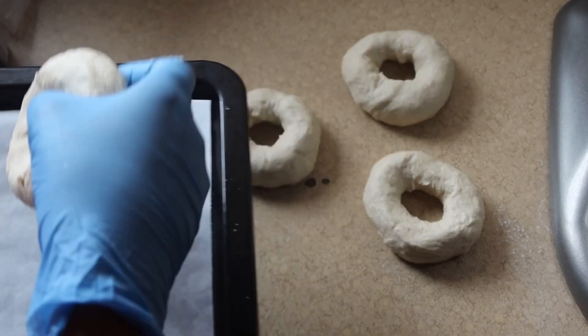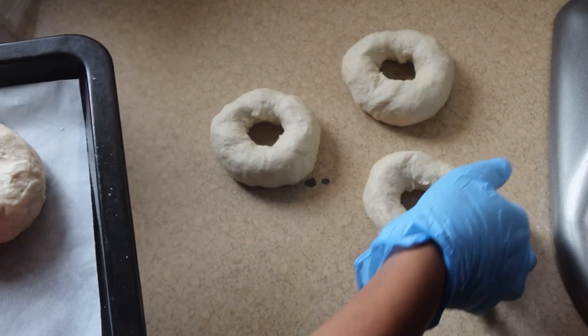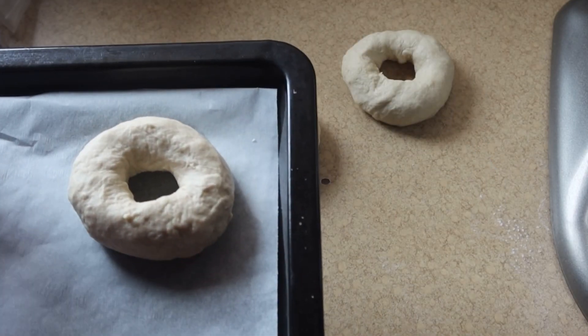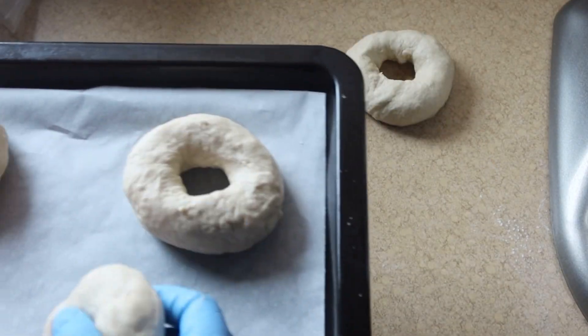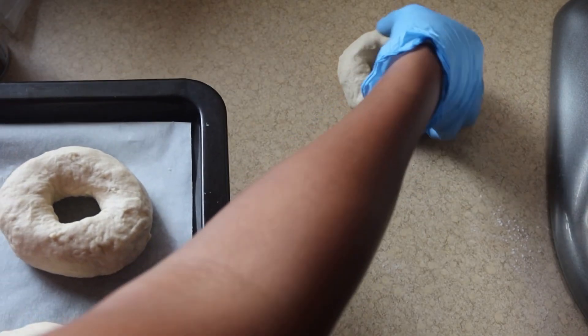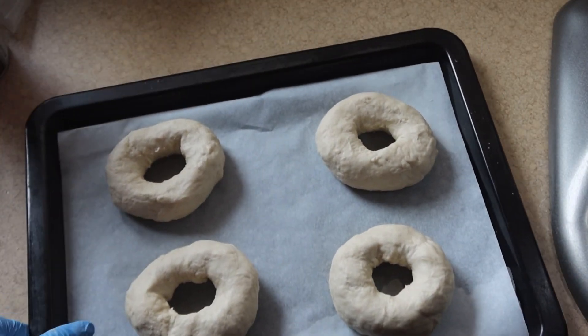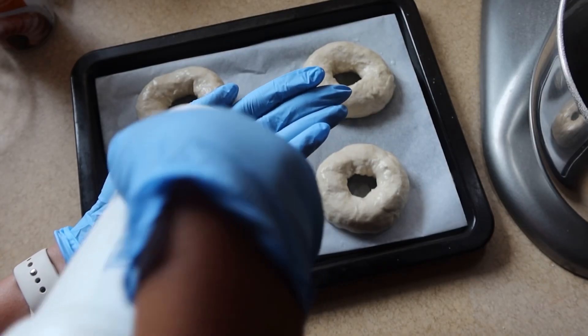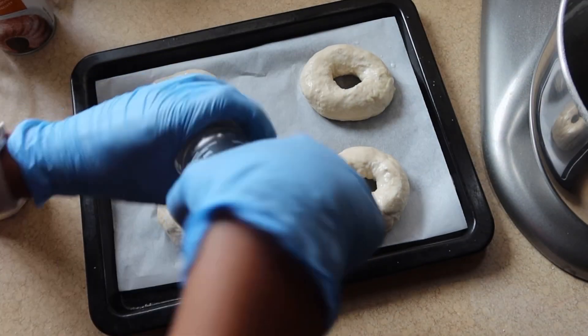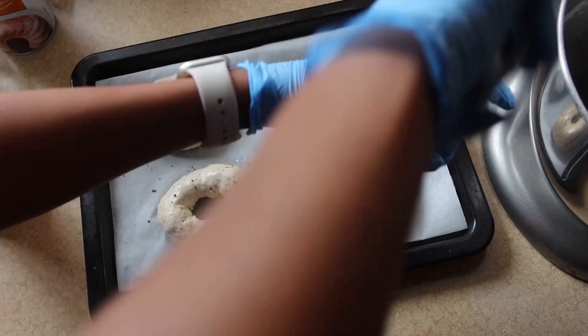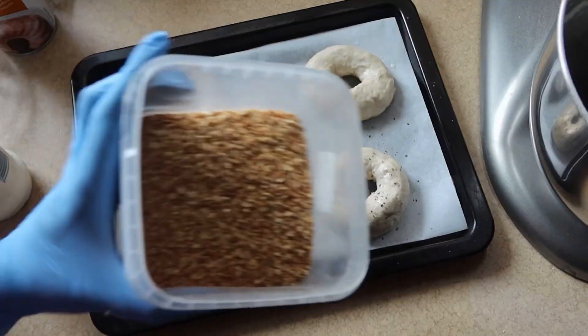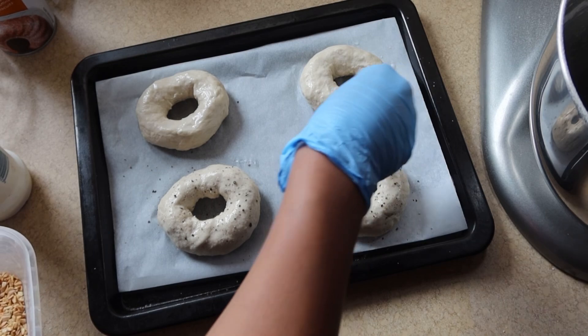Once you are done shaping all of your bagels, you can put them onto a baking tray. I line mine with baking paper. If you don't have it, you could just use some baking spray. Please don't forget to egg wash your bagels. Don't milk wash them like I did, they come out very naked and very bare.